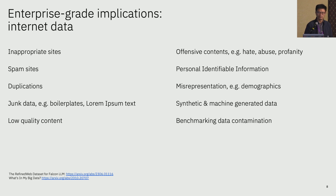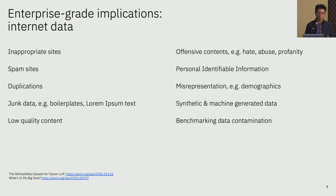Purely from a data quality and risk point of view, there are quite a few issues. There are obviously inappropriate sites and contents, spam sites, and duplicates of legitimate sites — so there are a lot of duplicates. Even in some of the legitimate sites, there is a lot of low-quality content and junk content that you don't really want getting into the model in the first place. The data itself has a lot of offensive and toxic content, and a lot of personal information as well. From a demographic and representation point of view, they are pretty biased, because of internet users and how they see and represent the world.